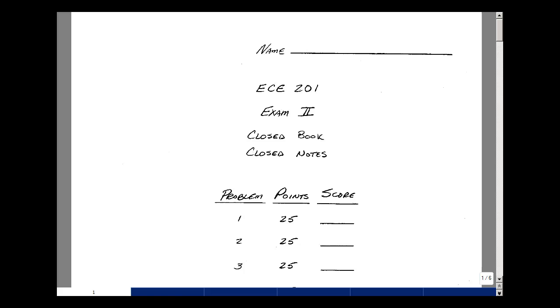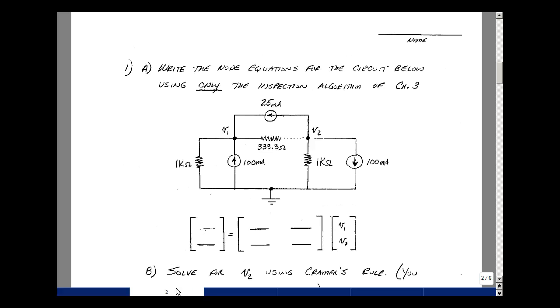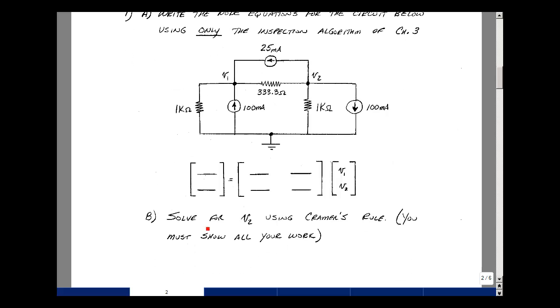Let's take a look at the problems in the exam, and you'll then have 60 minutes to do this. The first problem, can you write the node equations for the circuit below using only the inspection algorithm of chapter 3? Once you do that, can you then solve for V2 using Kramer's rule? I'd like you to show all of your work.